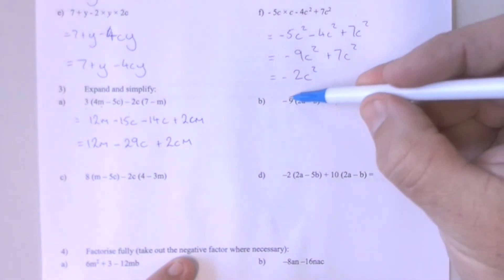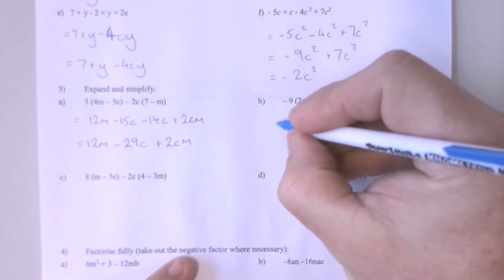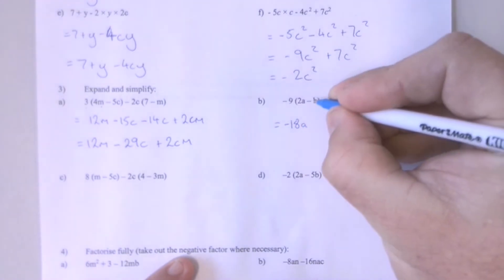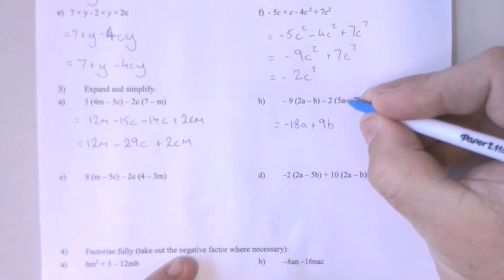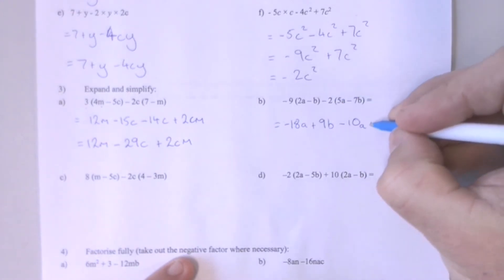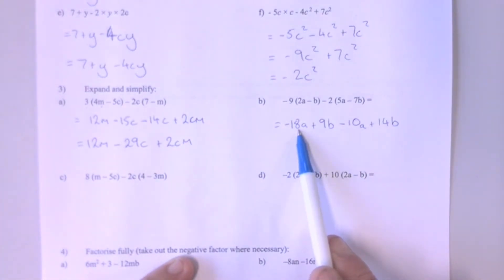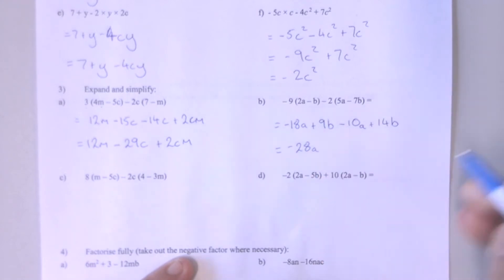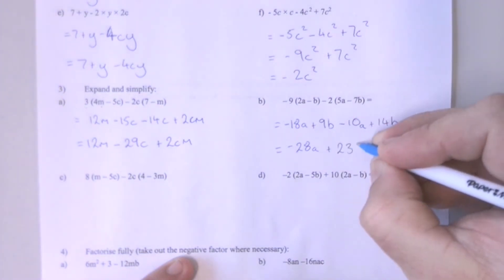Question 3B. We're going to expand our brackets and then collect our like terms to simplify. I've got minus 9 times 2A making minus 18 groups of A. Minus 9 times minus 1B making positive 9 groups of B. Minus 2 times 5A giving me minus 10 groups of A. And minus 2 times minus 7Bs making 14Bs. Collecting like terms: minus 18As minus another 10 groups of A gives me minus 28 groups of A. And 9Bs plus 14Bs gives me 23 groups of B.